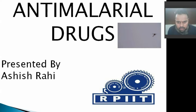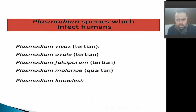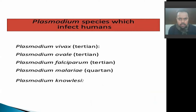Hello everyone, my name is Ashish Rai, assistant professor at RPIIT, and today I am presenting about anti-malarial drugs. Malaria is spread from the mosquito species plasmodium, which has four types: plasmodium vivax, ovale, falciparum, and plasmodium malariae.